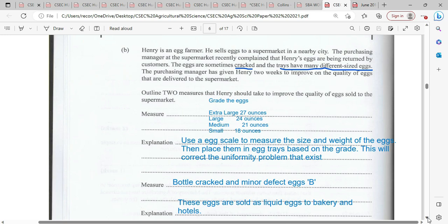Measure one. Henry needs to grade these eggs. Eggs can be graded using extra large, large, medium, and small. Use an egg scale to carry out the grading to measure the size and weight of the eggs. Then place them in egg trays based on the grade. This will correct the uniformity problem that exists in the supermarket.